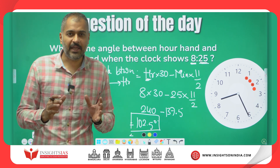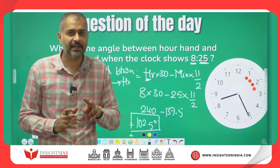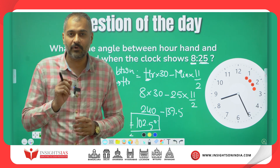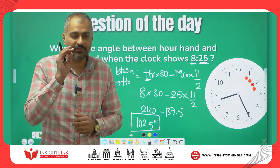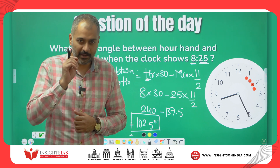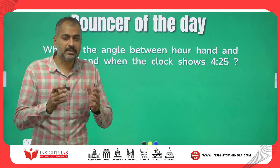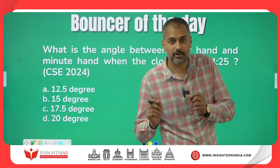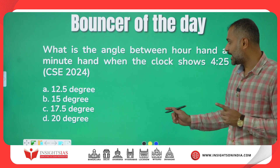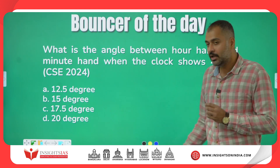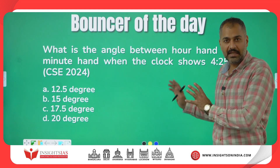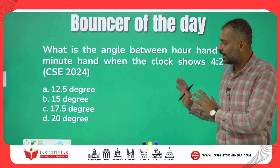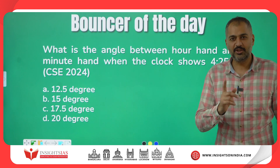The same question with different data was asked in the recently concluded 2024 CSE CSAT paper. I will give you that as the Bouncer of the Day homework. Try to answer this question and put your answer in the comment section. Using the same trick, you can answer it very easily — within 30 seconds. Thank you, I'll see you in the next video.